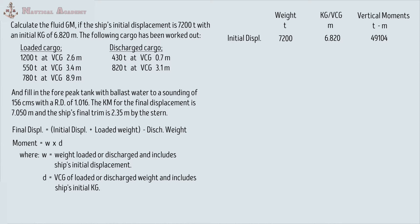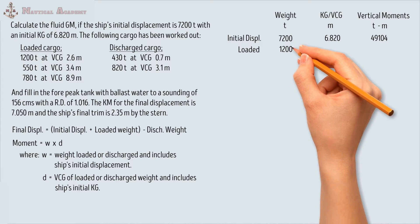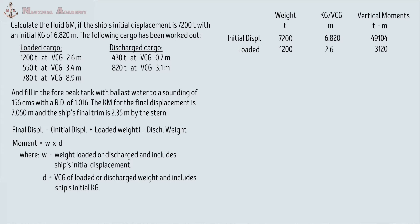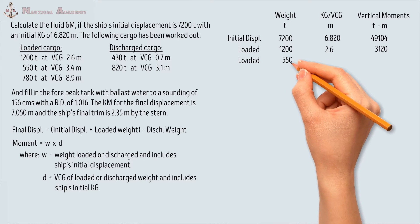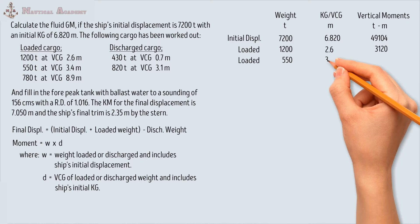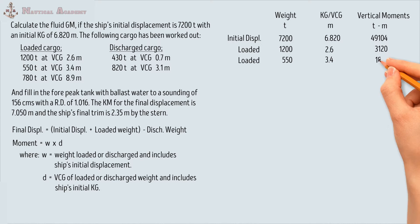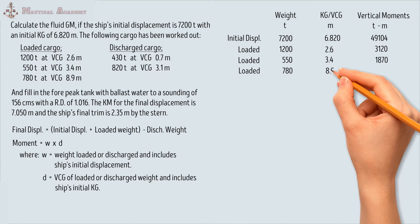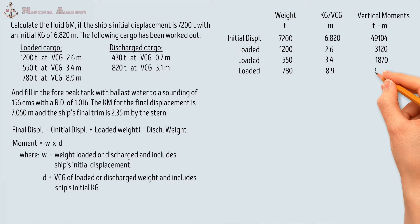Next, we will determine the vertical moment of the cargo being loaded and discharged, and that includes the moment of the ballast water filled into the 4-peak tank. The cargo being loaded is 1,200 tons multiplied by its VCG of 2.6 meters — the vertical moment is 3,120 ton-meter. Another cargo is 550 tons times its VCG of 3.4 meters — the moment is 1,870 ton-meter. Then another cargo being loaded is 780 tons times its VCG of 8.9 meters — the moment is 6,942 ton-meter.